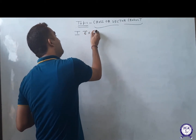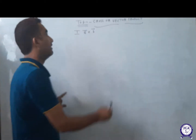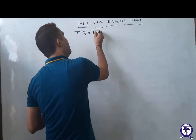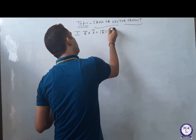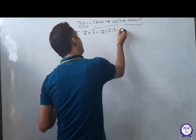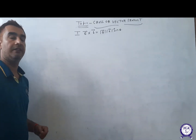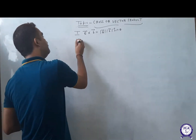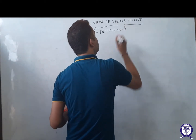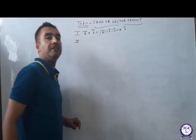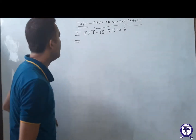CROSS between two vectors: first vector CROSS second vector is equal to magnitude of first vector, magnitude of second vector, and sine of the angle between both vectors. Here we print it as n̂, which means that is a unit vector normal to the plane.